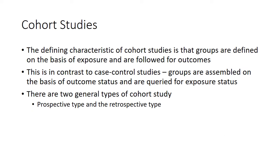The defining characteristic of the cohort study is that groups are defined on the basis of exposure and then followed for outcomes. This is in contrast to case-control studies, where groups are defined based on whether or not they had disease, and then you look backwards to see if they had an exposure. There are two different types of cohort studies: prospective and retrospective.